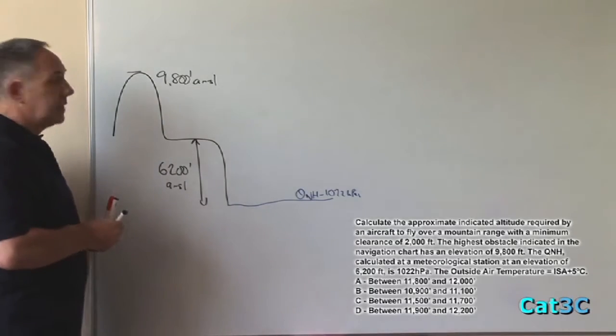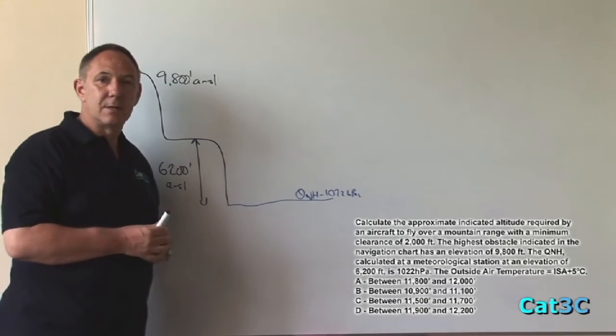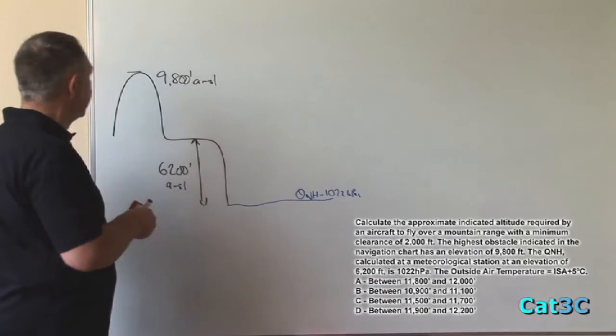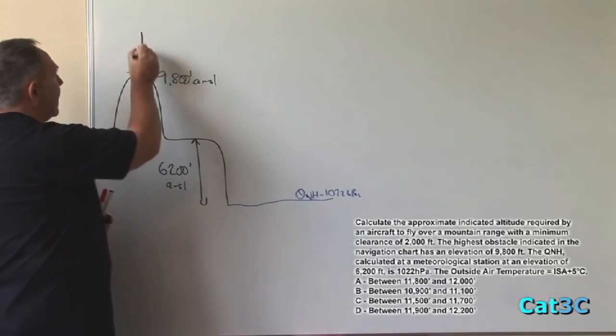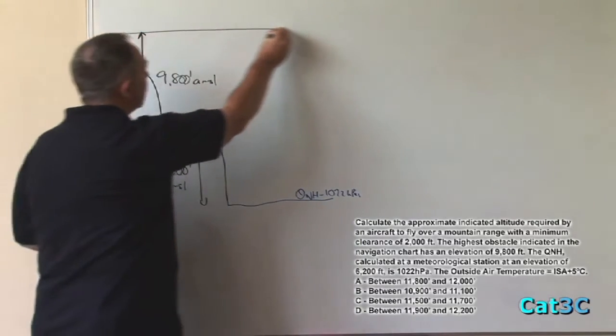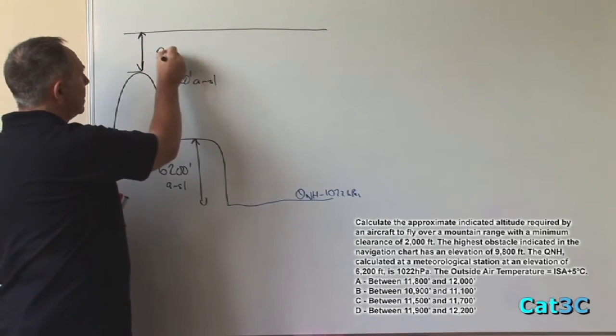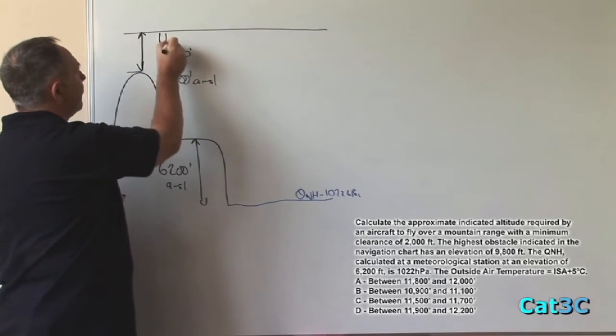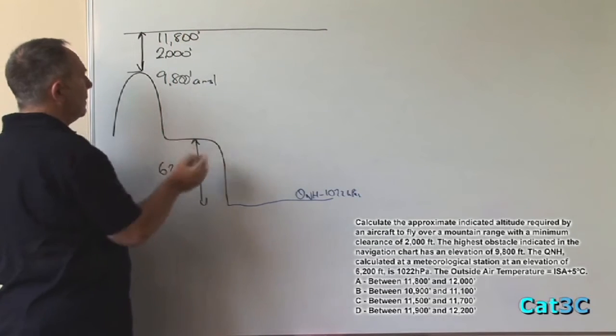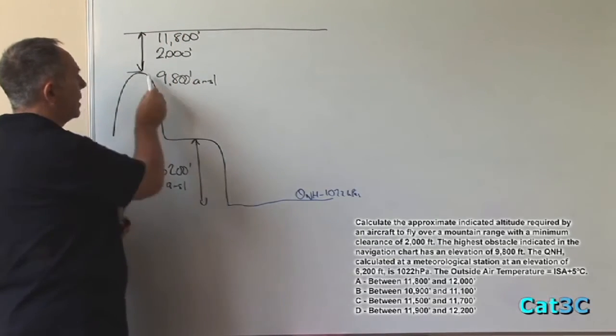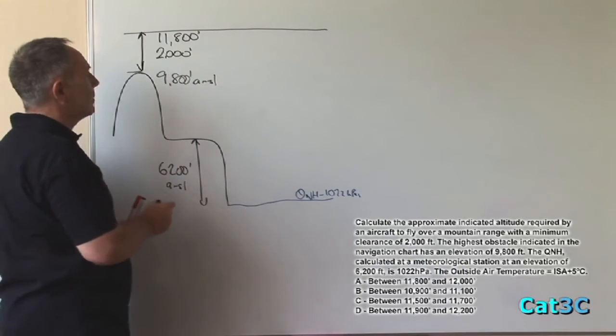The aircraft is required to clear the mountain range by 2,000 feet, which is that part there, which gives us a minimum required altitude of 11,800 feet, being the sum of the elevation of the highest terrain plus the 2,000 feet clearance.